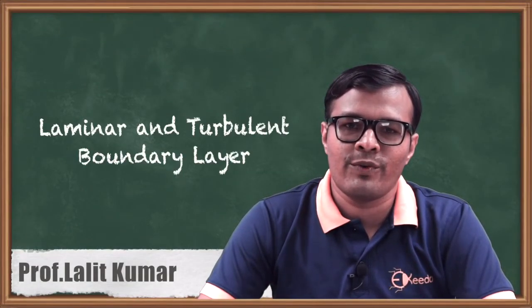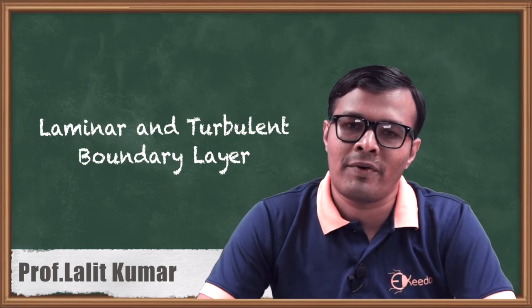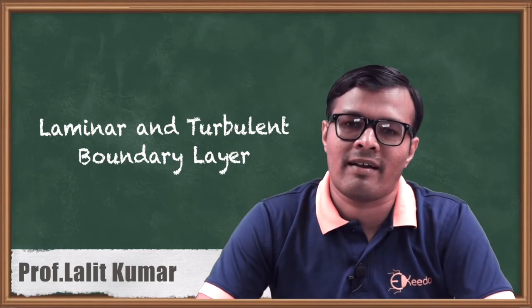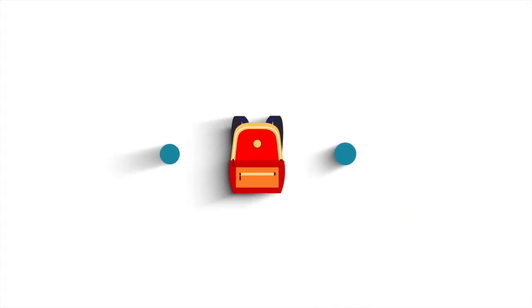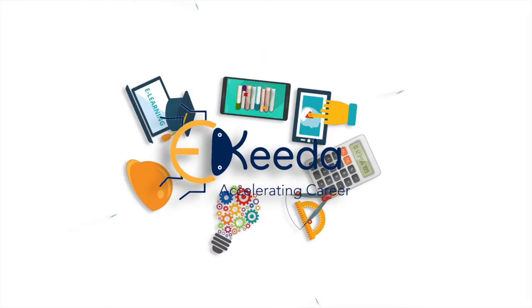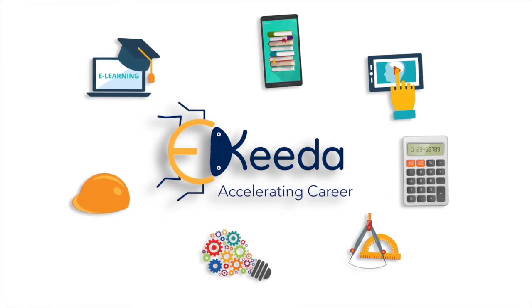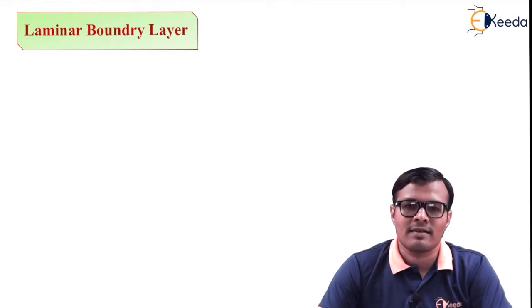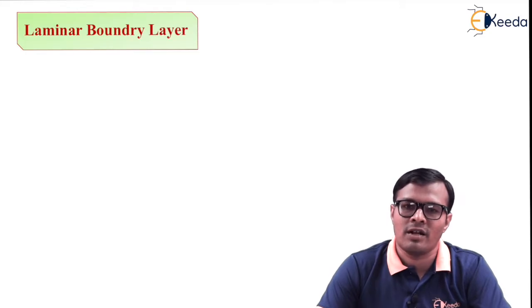Hello friends! In this video we are going to see various characteristics of the formed boundary layer, that is laminar and turbulent. We all know that when a boundary layer starts around a body, due to changes in Reynolds number there are various types of boundary layers such as laminar, transitional, and turbulent.